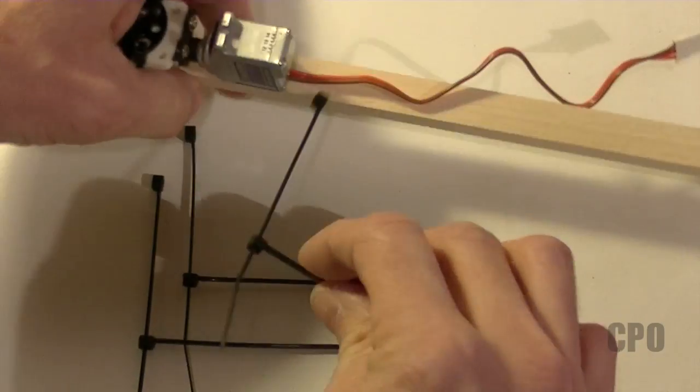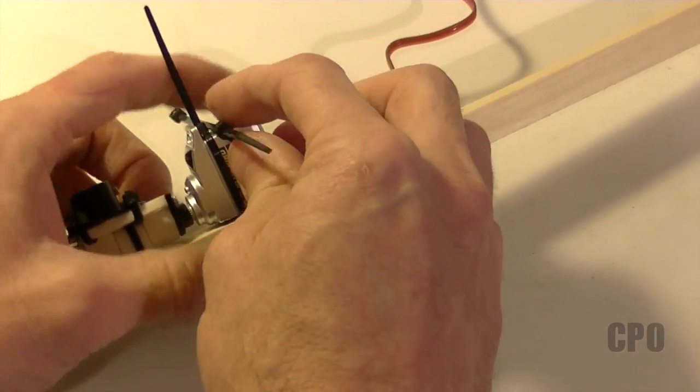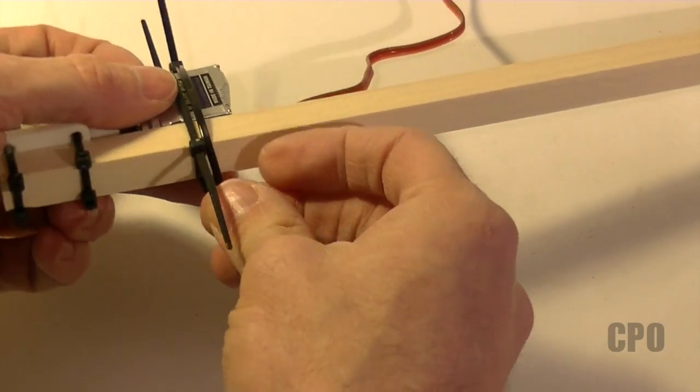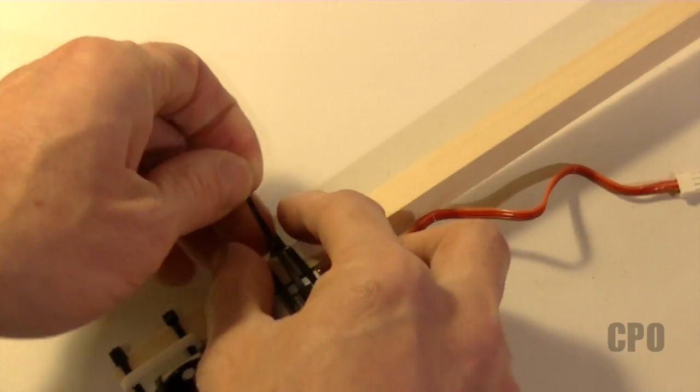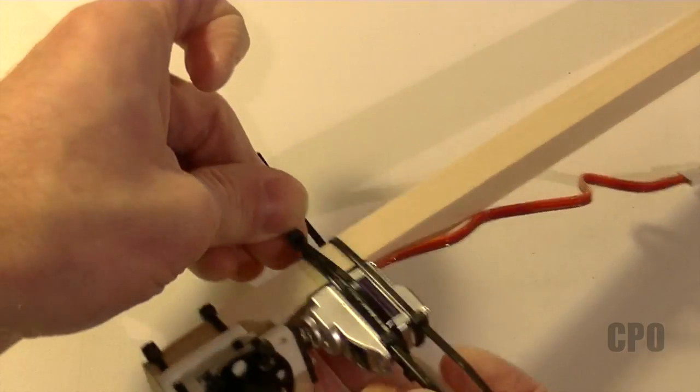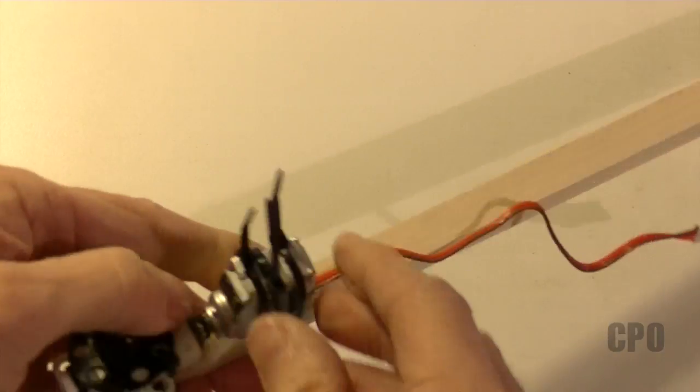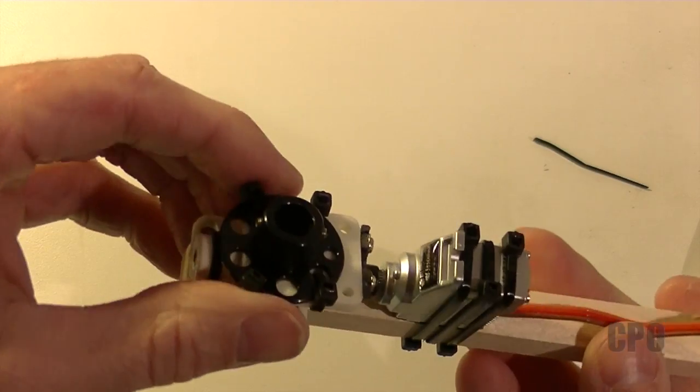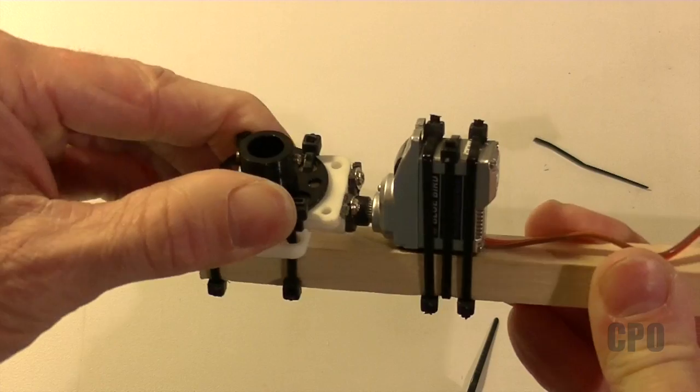I then used a total of six zip ties on the servo, basically three sets of two. And make sure you alternate the direction of the zip ties so that all of the force is distributed evenly across the servo and the boom. Here's what the final assembly looks like. Everything should be nice and snug. If you have any movement you'll have to readjust.